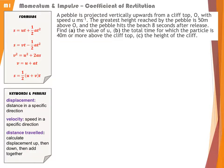A pebble is projected vertically upwards from a cliff top O with speed U. The greatest height reached by the pebble is 50 metres above the cliff top, and the pebble hits the beach 8 seconds after release. We need to find the initial speed U, the total time for which the particle is 40 metres or more above the cliff top, and the height of the cliff.